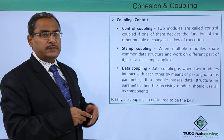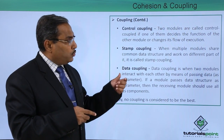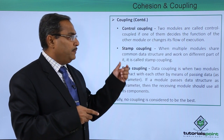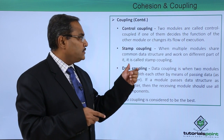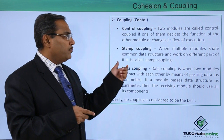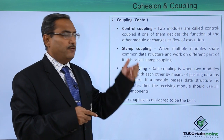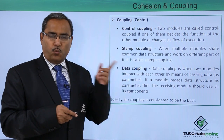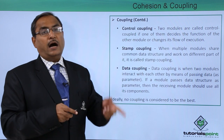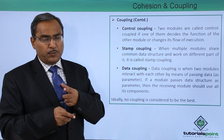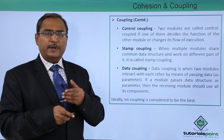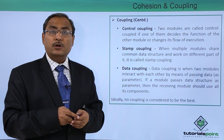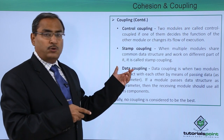The next level is control coupling. Two modules are called control coupled if one of them decides the function of the other module or changes its flow of execution. So one module is deciding how the other module will have its flow of execution — that is control coupling.